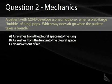A patient with COPD develops a pneumothorax — a collapsed lung when a bleb or a large bubble of lung pops. Which way is the air going to go when the patient takes a deep breath?